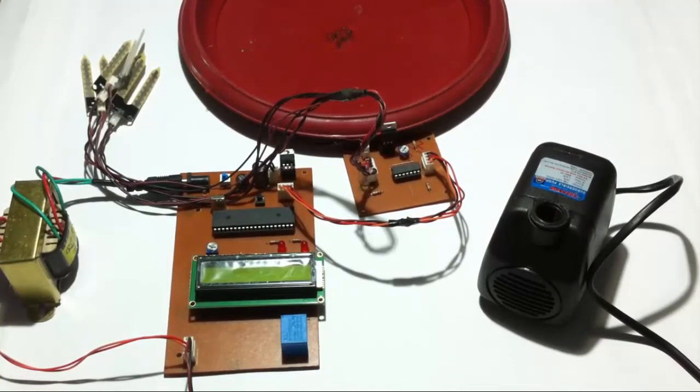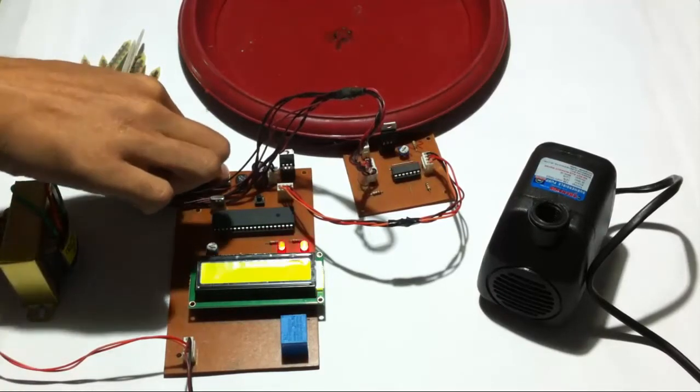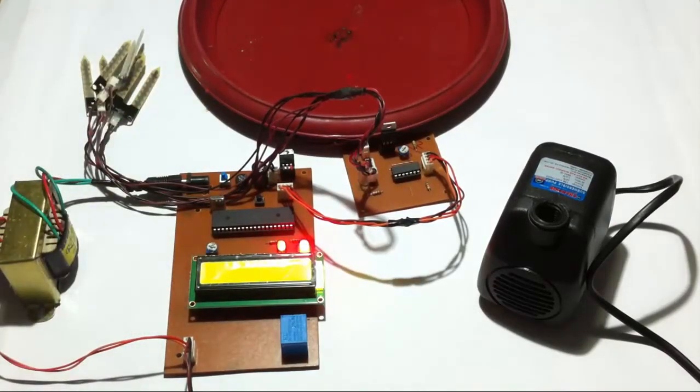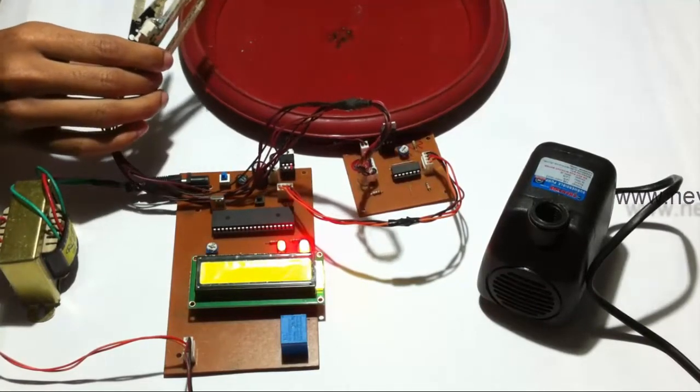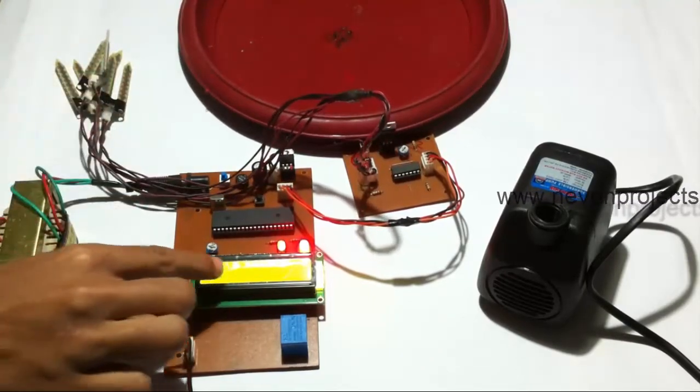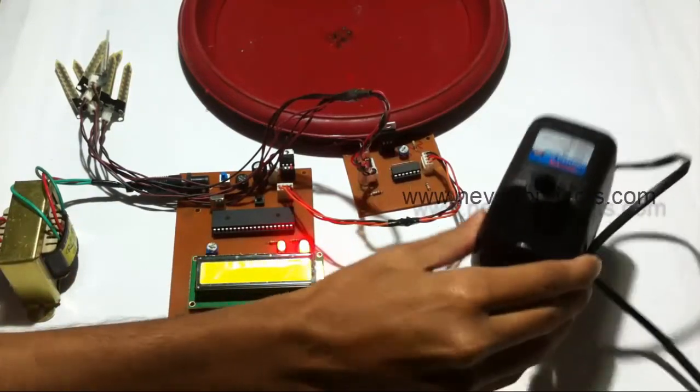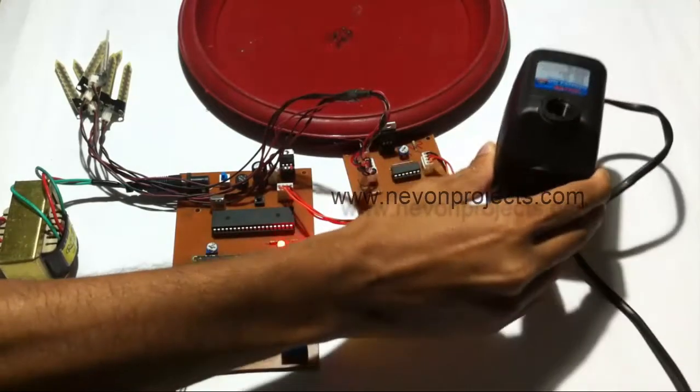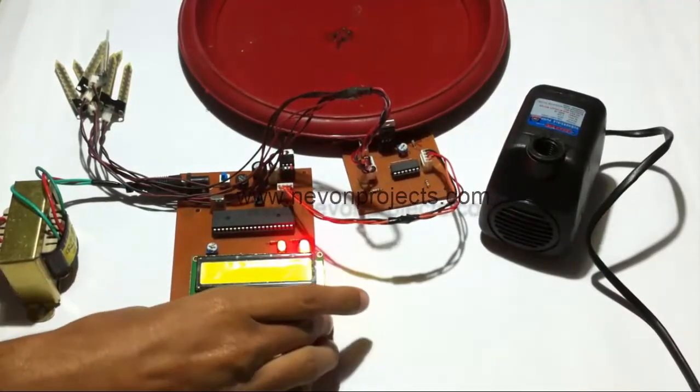Let's see how the system works. Let's start the system here. Now you can see that since the sensors are out of water, it's showing the message 'soil dry' and 'motor on', and you can hear that the motor is on right now.